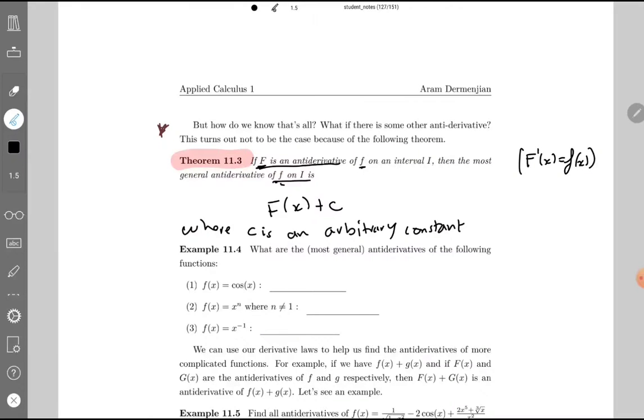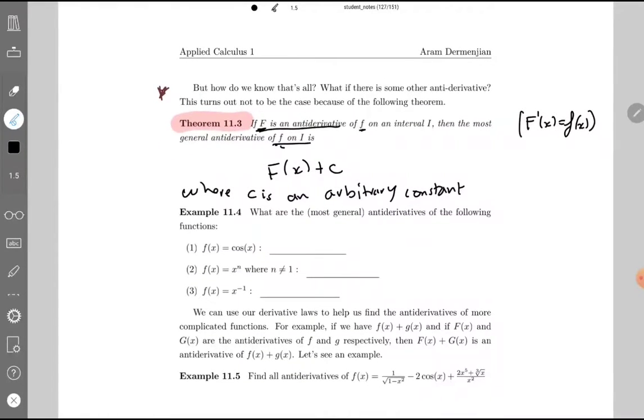So let's look at some examples. What are the most general antiderivatives for the following functions? Basically I'm asking, what function do I need when I take the derivative, I'll get the function here on the left. Cosine - if you remember, this is just the derivative of sine. So here we have f(x) = sin(x), but I also need plus c because I'm being asked the most general. This is because f'(x) is equal to cos(x), which is equal to f(x).